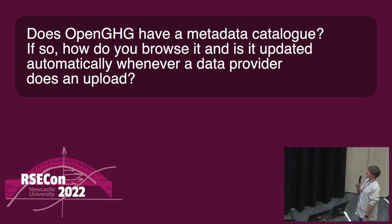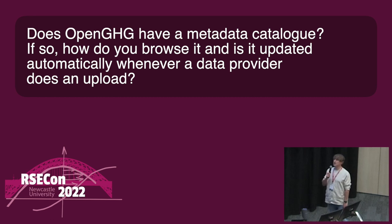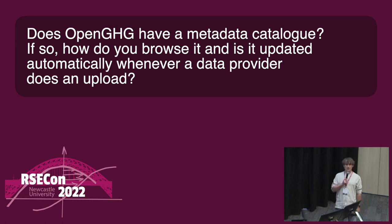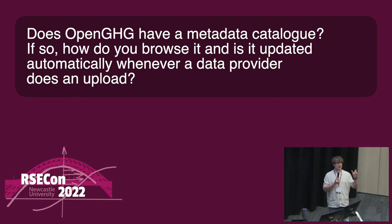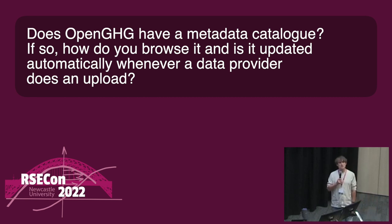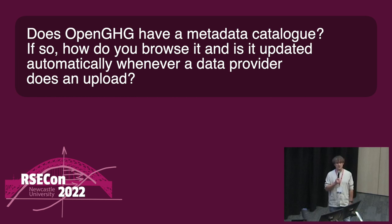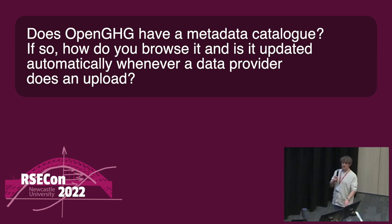Does OpenGHG have a metadata catalog, and if so how do you browse it - is it updated automatically? Yes - we store all the metadata in a little JSON database called TinyDB, which is a nice way of storing metadata. Whenever we upload some data we create a UID for that dataset, and all metadata is stored in the metadata database. When you want to request the data again, we just search through that database and pull the data from the object store. Everything is updated when people upload. One of the problems with metadata is making sure people provide enough - when data providers upload data you need to make sure they're passing the right arguments, because things get mixed up if there isn't enough uniquely identifying information.